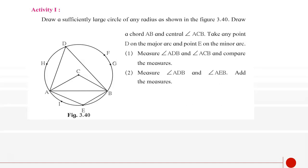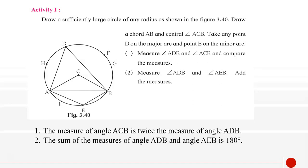Measure angle ADB and angle ACB and compare the measures. Next, measure angle ADB and angle AEB and add these measures. You will find that the measure of angle ACB is twice the measure of angle ADB, and the sum of the measures of angle ADB and angle AEB is 180 degrees.